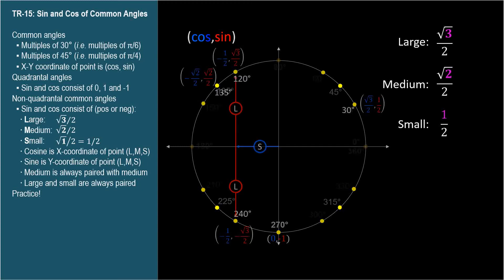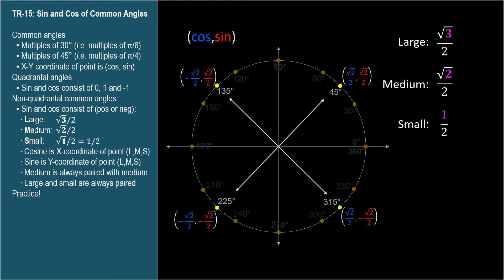You may have noticed that medium will always be paired with another medium, and that's for these forty-five degree angles that bisect each quadrant. Just be careful of the signs, positive or negative.